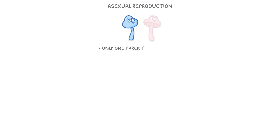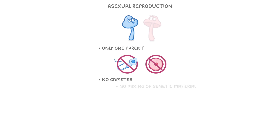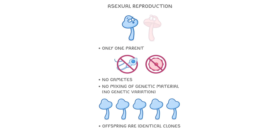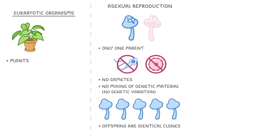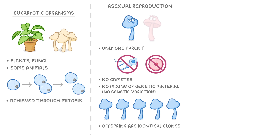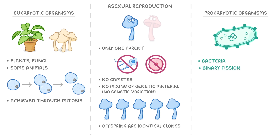Asexual reproduction, meanwhile, takes place with only one parent and doesn't involve any gametes. This means there's no mixing of genetic material and so no genetic variation, which means all of the offspring are identical clones. For eukaryotic organisms such as plants, fungi, and a few animals, this asexual reproduction is achieved through mitosis, while prokaryotic organisms such as bacteria do it by binary fission.